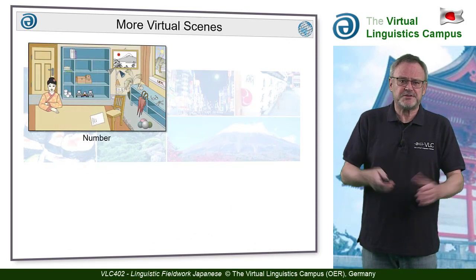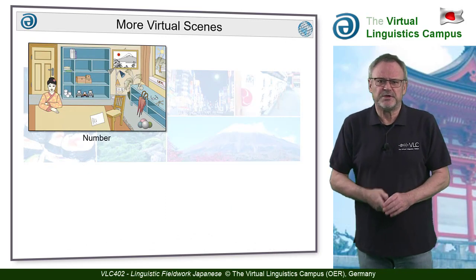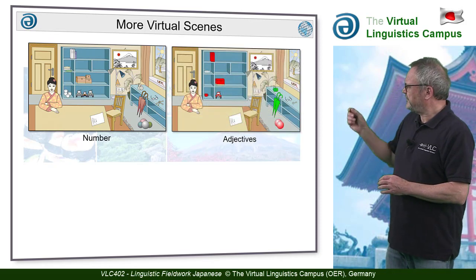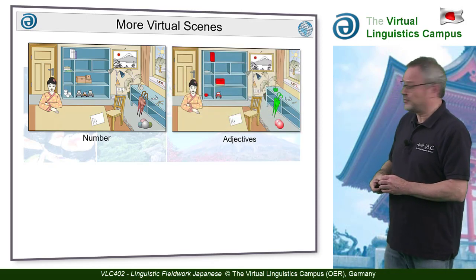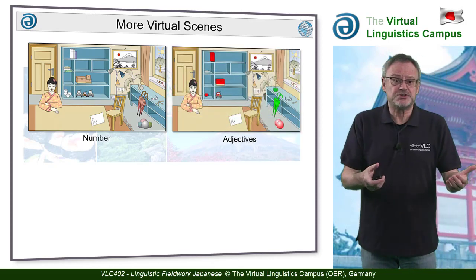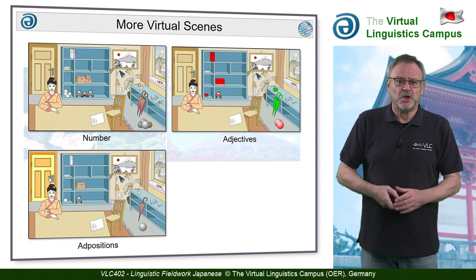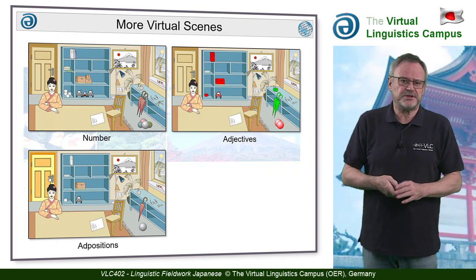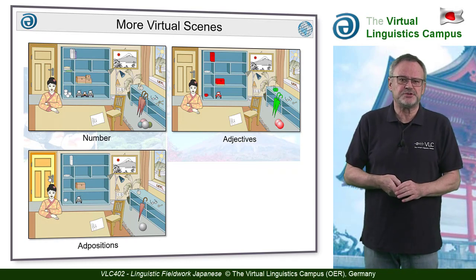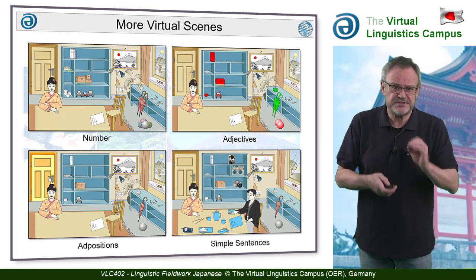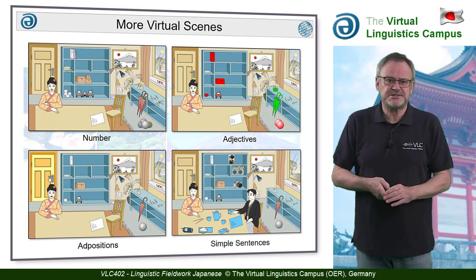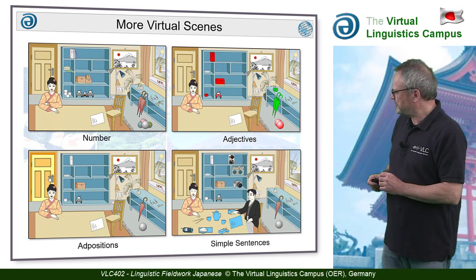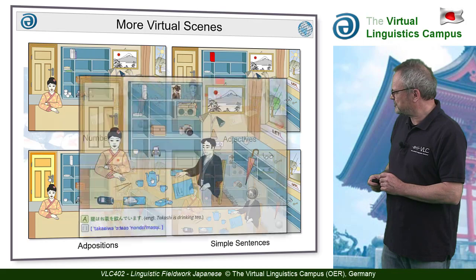Further scenes deal with number, with adjectives — for example the colors — with locative relationships and the organization of appositional phrases, and even with sentences that are acted out by a second person in the virtual room.